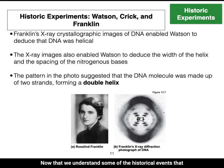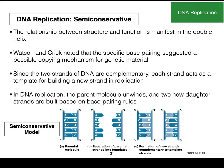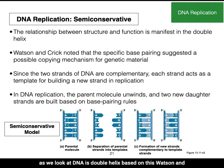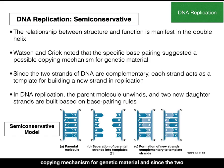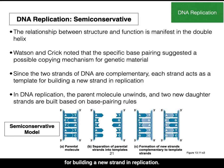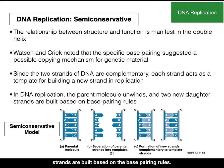Now that we understand some of the historical events that led to our basic understanding of DNA, let's discuss how DNA is replicated. Watson and Crick noted that specific base pairing suggested a possible copying mechanism for genetic material. Since the two strands of DNA are complementary, each strand acts as a template for building a new strand in replication. In DNA replication, the parent molecule unwinds and two daughter strands are built based on the base pairing rules.